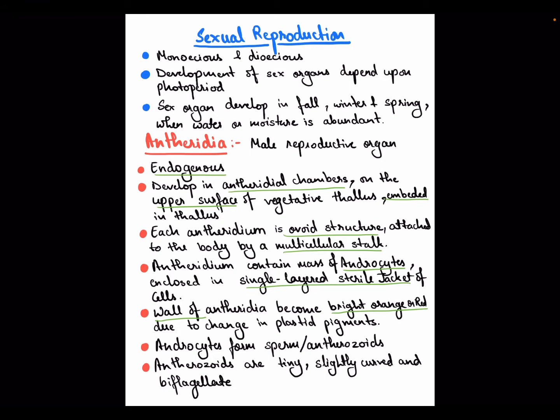So to summarize: some species are monoecious, some dioecious, and sex organ development is dependent on photoperiod. Water content is also very important because Anthoceros is a bryophyte. Bryophytes are called the amphibians of the plant kingdom because, for physiological processes like fertilization, they are dependent on water as a medium.